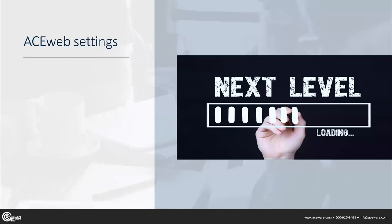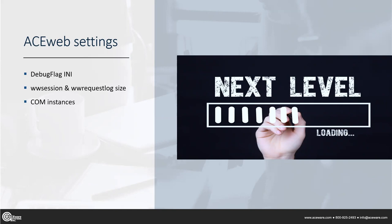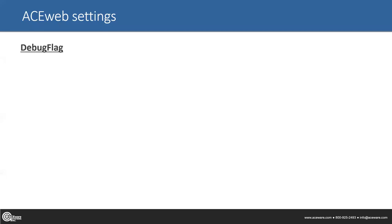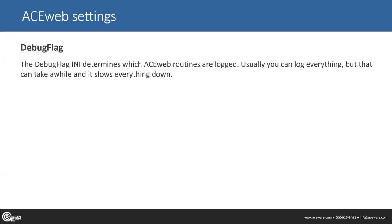Let's talk about ACE Web settings — this is going to be kind of fast. Not all of you have access to these ACE Web settings I'm going to talk about. You may have access to some but not all, because these really are at the full ACE Web site level and also at the server level. Again, the debug flag. There are also files — your WW session and WW request log — we want to consider the size of those. And then something called comm instances. These affect all of ACE Web, not just Quick Pick, so there may be some trade-off if you also have regular ACE Web running.